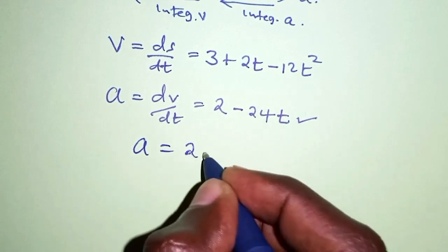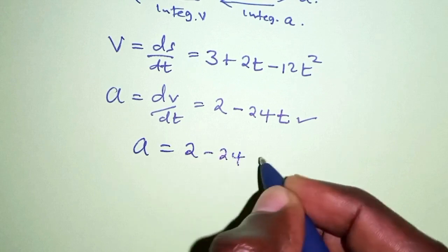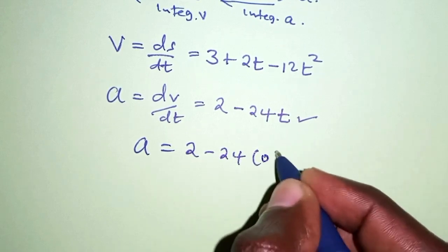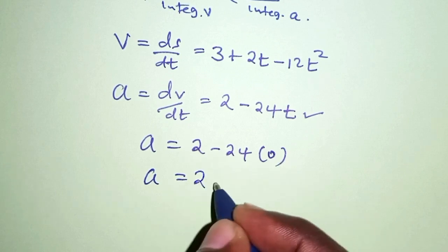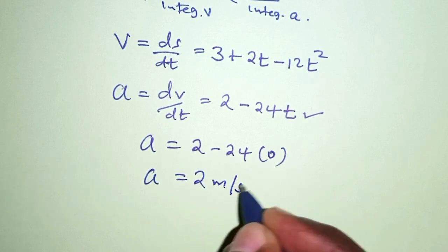2 minus 24t, but t is 0. Therefore, a = 2 meters per square second.